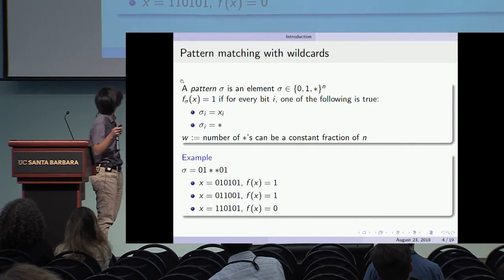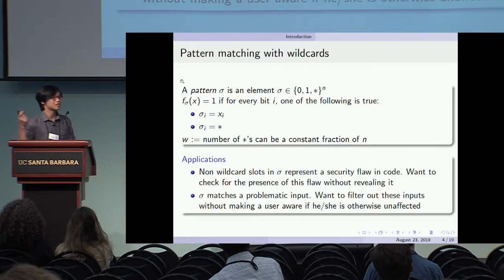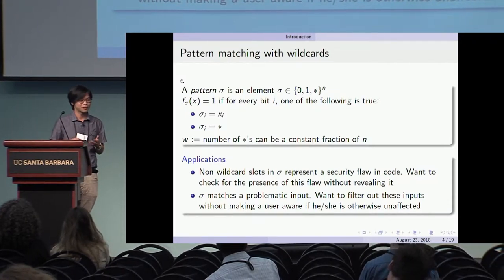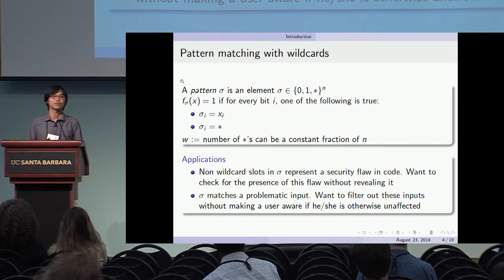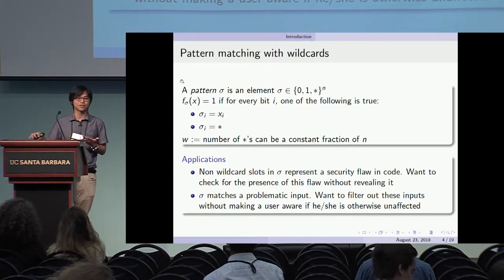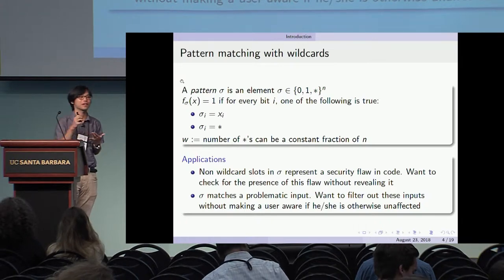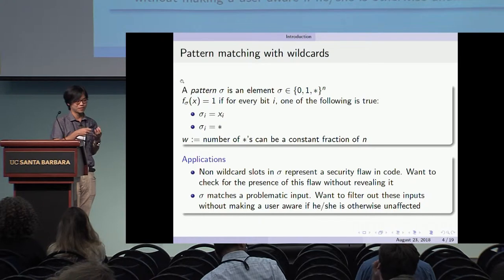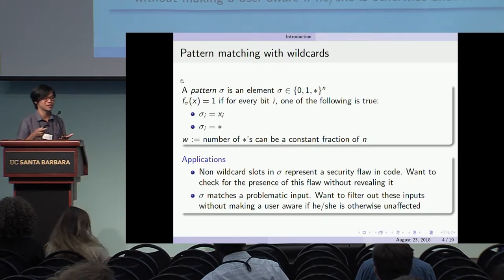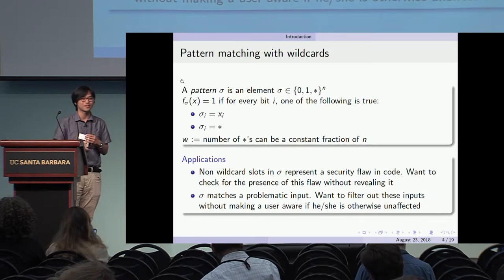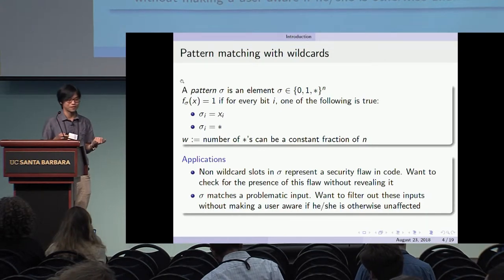So hopefully the function class is clear. Some possible applications: suppose you're trying to check code for a security flaw, and the non-wildcard slots indicate where the security flaw is. If a person has that security flaw, you want them to be able to detect it in their code, but you don't want to tell everyone where the non-wildcard slots are, because then people who don't already have this problem could go look for it.